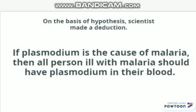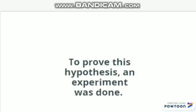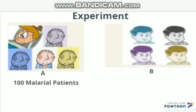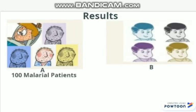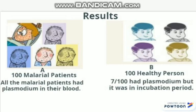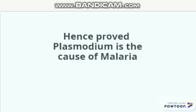At that time, the deduction was made: if Plasmodium is the cause of malaria, then all people ill with malaria should have Plasmodium in their blood. To prove the hypothesis, a controlled experiment was done. Scientists made two groups — Group A with 100 malarial patients and Group B with 100 healthy patients. Blood samples from both groups were examined under the microscope. The results showed all malarial patients had Plasmodium in their blood. In Group B, 7 out of 100 had Plasmodium, but it was in the incubation period — the period between the entry of a parasite and showing the symptoms. Hence proved, Plasmodium is the cause of malaria.